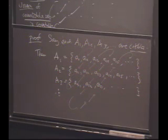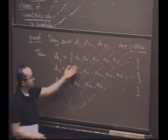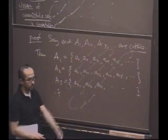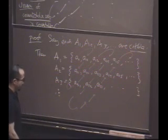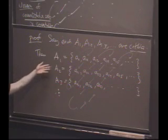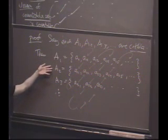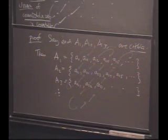Well, your objection, which is a reasonable objection, is what if one of the sets is in fact not countable but finite? Right, okay. And I didn't address that. I have to.